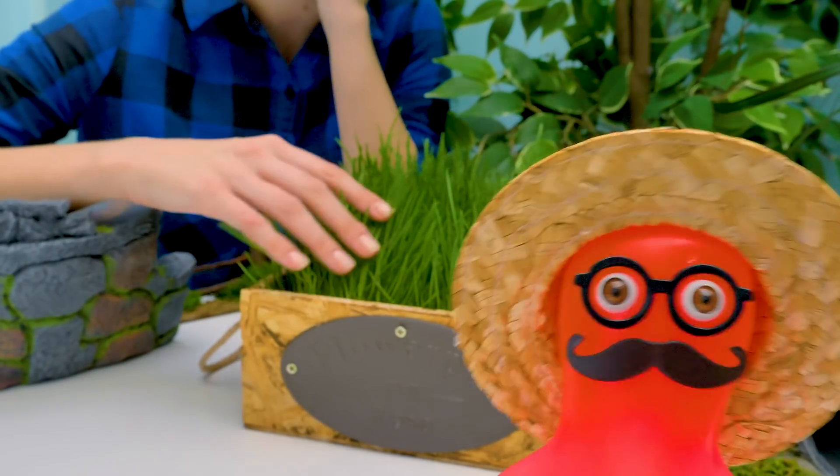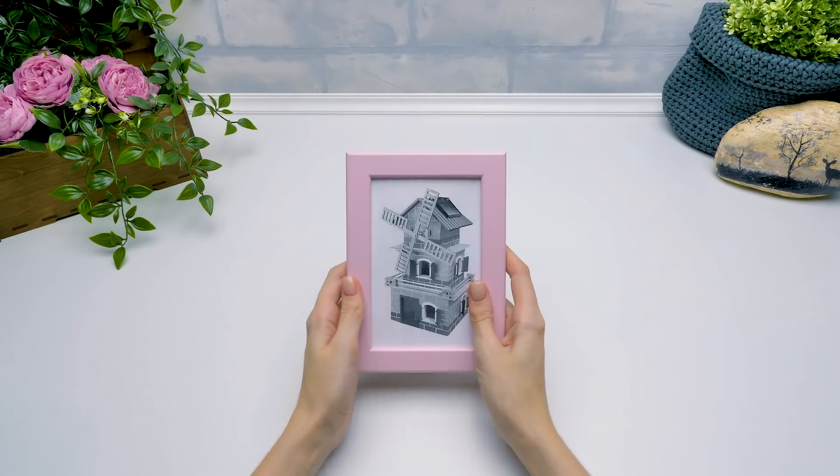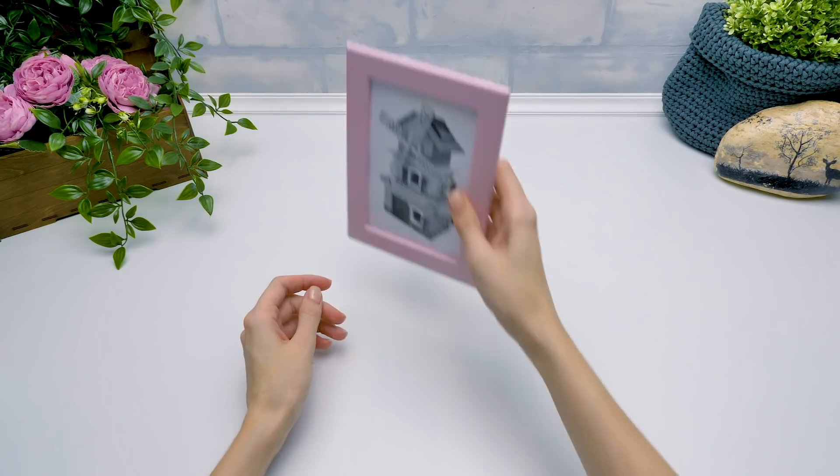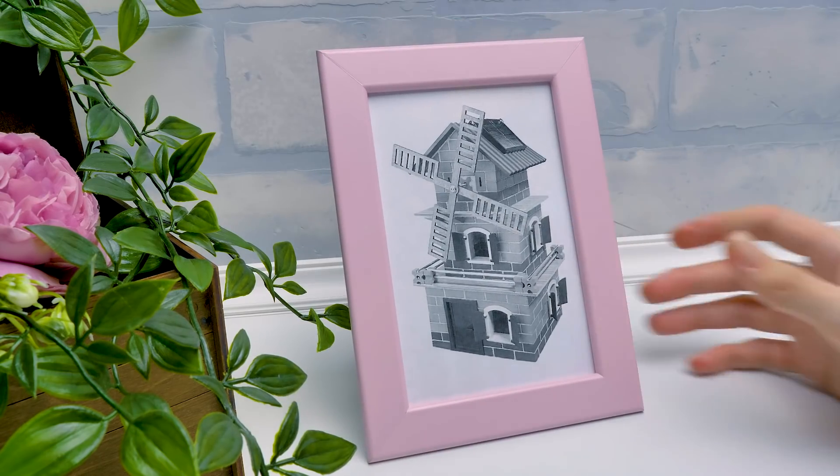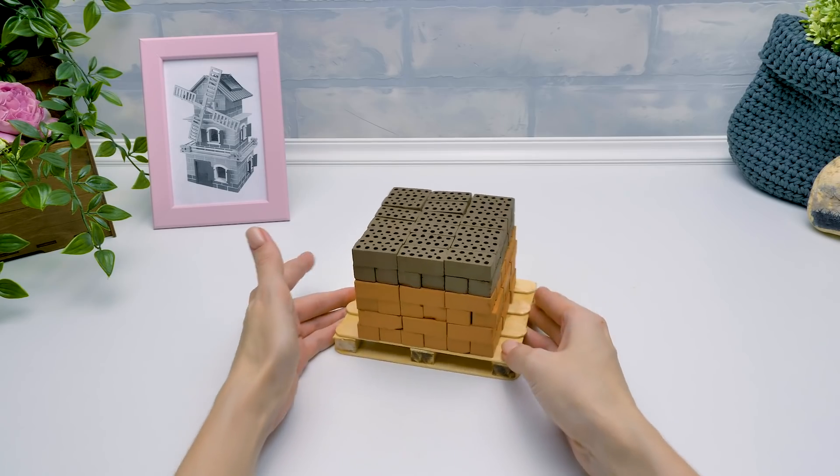The wheat will ripen soon and we'll have to make the flour. For what? Pizza, of course. Oh, then we need to start building right away. So, Farmer Sam approved the project and it's time to get started. Today we're going to make a craft using these adorable mini bricks again. Yay!